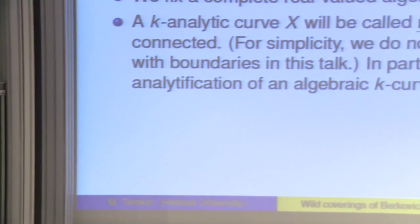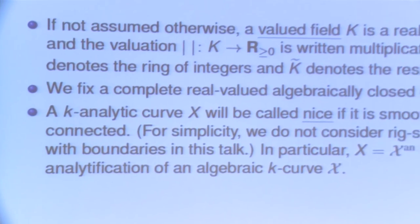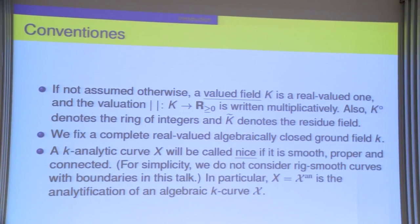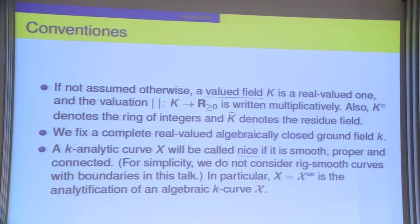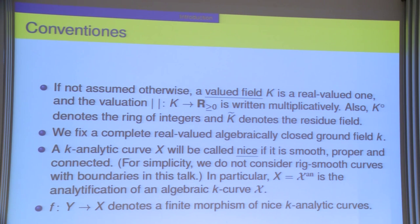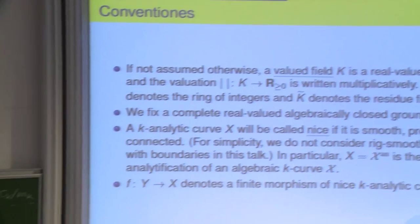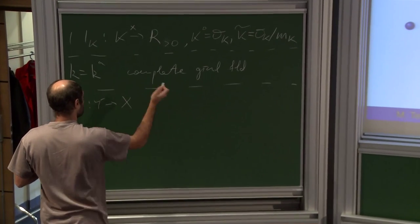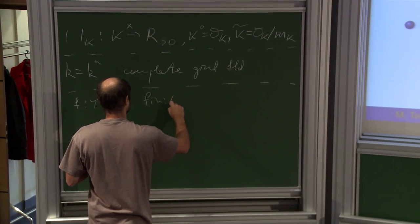A k-analytic curve X will be called nice if it is smooth, proper, and connected. In the papers, one considers a slightly broader notion of nice, but for us it is just smooth, proper, connected. It is then analytification of some algebraic curve which is also nice. And f will denote a morphism we want to study—a finite morphism of nice curves.